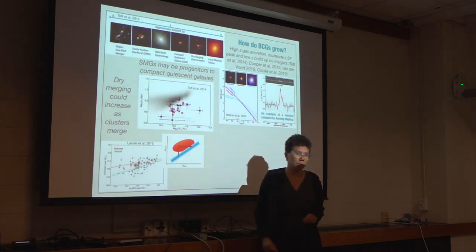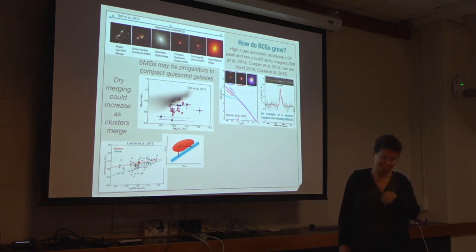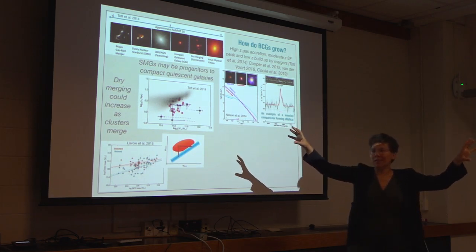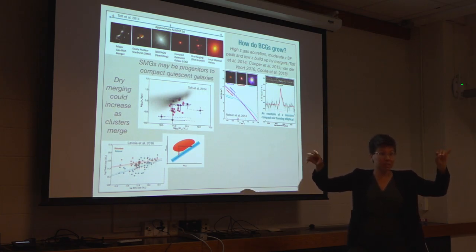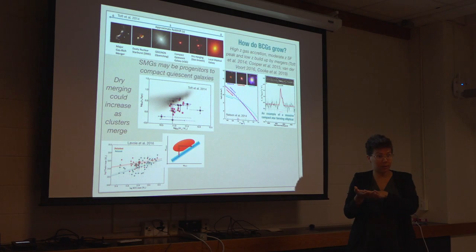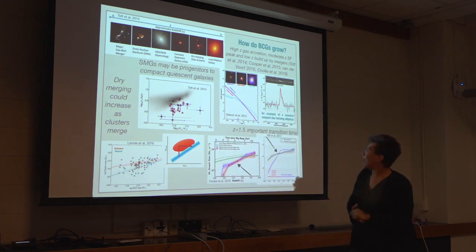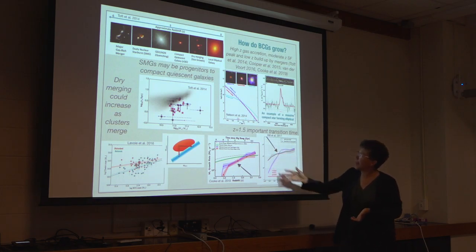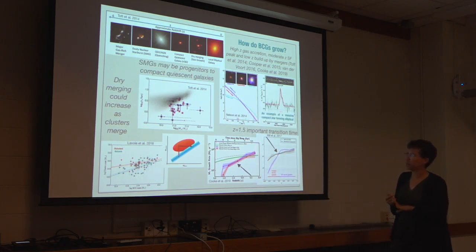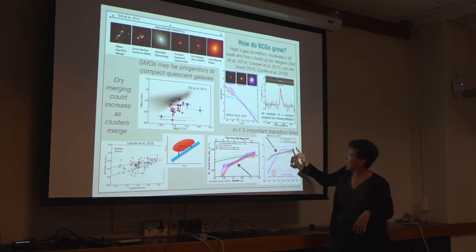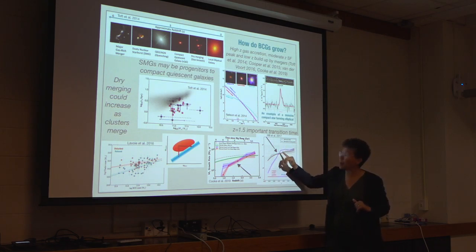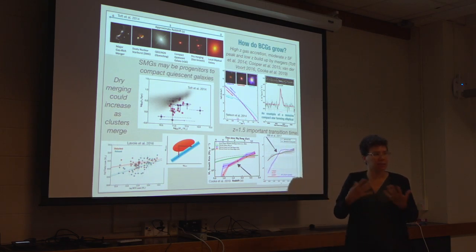Some time has to pass before the BCGs merge together and the mass of the BCG also increases — that's from B to C. So in the distant universe, you have smaller lower-mass clusters with lower-mass BCGs. Clusters combine; it takes a little while for the BCGs to combine. Z equals 1.5 is kind of an important transition time, from data like the CANDLES survey, where the growth of the BCG is driven by in-situ star formation until about z equals 1.5, and then merger-driven growth beyond that into today's universe.